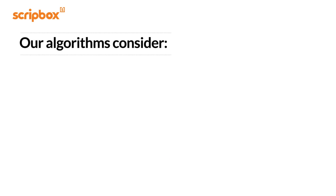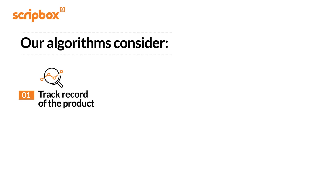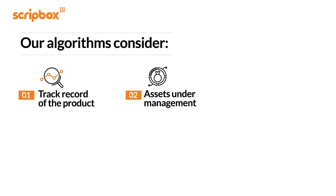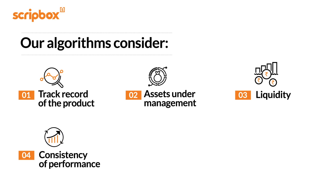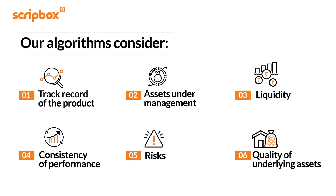Here's everything our algorithms consider: Track record of the product — how long has it been around? Assets under management — how much wealth has been invested in it already? Liquidity — how easy is it to invest in or withdraw from it? Consistency of performance — how much have the returns fluctuated? Risks — what kind of risks is the product exposed to? Quality of underlying assets — how healthy are the underlying assets that the fund has invested in?